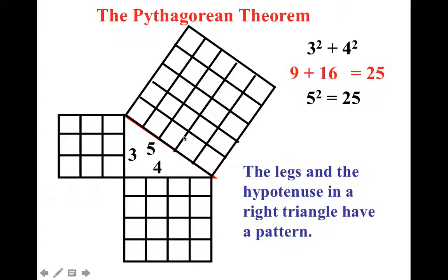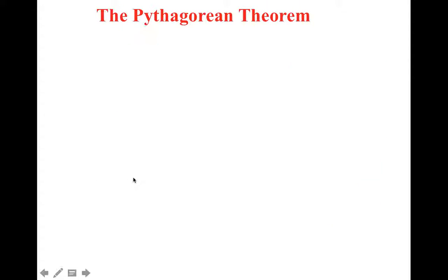So what he found was this very special formula that you've probably heard about: a squared plus b squared equals c squared. It only works if you've got a right triangle.